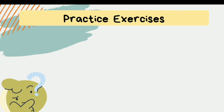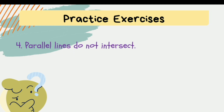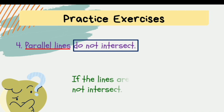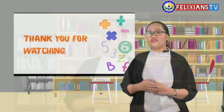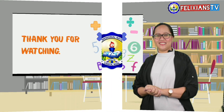For our last exercise, the statement is: parallel lines do not intersect. It talks about parallel lines that do not intersect. The if-then statement would be: if the lines are parallel, then they do not intersect. I hope you have learned something from me today. Thank you everyone and keep on watching our videos. Bye-bye.